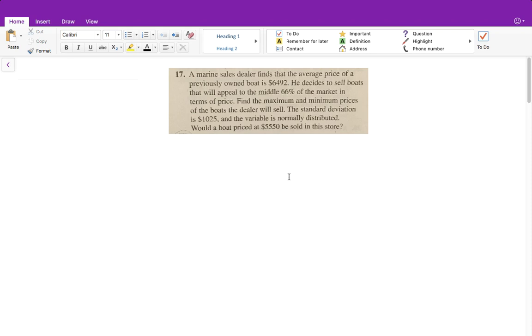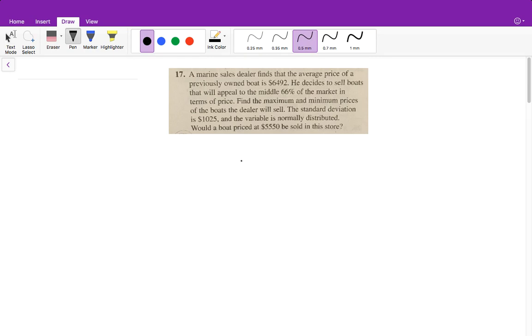All right, so I'm going to go through this really quick. We did this in class already, but remember, we have our normal distribution, and it says that a marine sales dealer finds that the average price of a previously owned boat is $6,492.